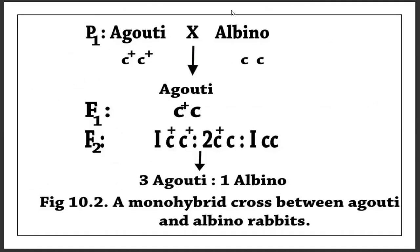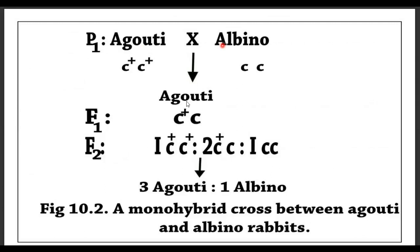Here is the first cross. The parents are agouti and albino. The F1 generation is agouti, showing that the agouti allele is dominant over the albino allele. In the F2 generation we get a ratio of 3:1 — three agouti to one albino. This is a monohybrid cross showing complete dominance of agouti over the albino allele.